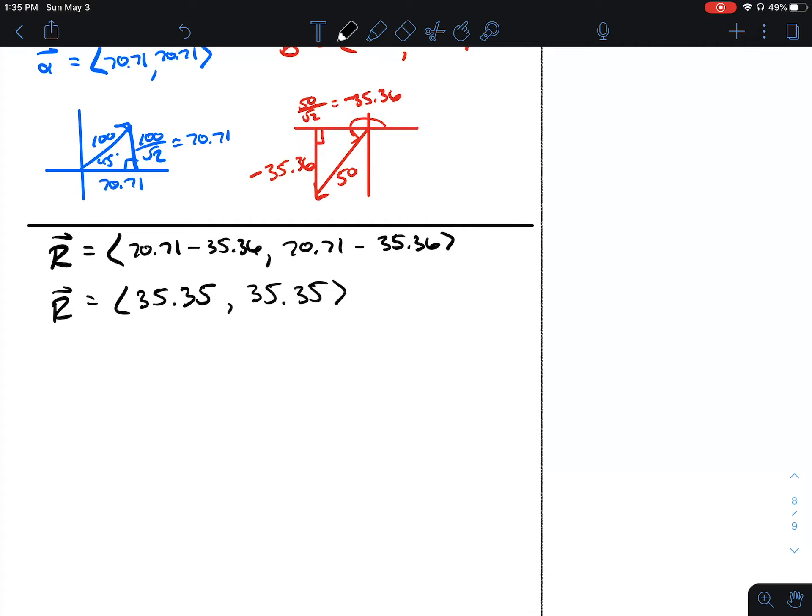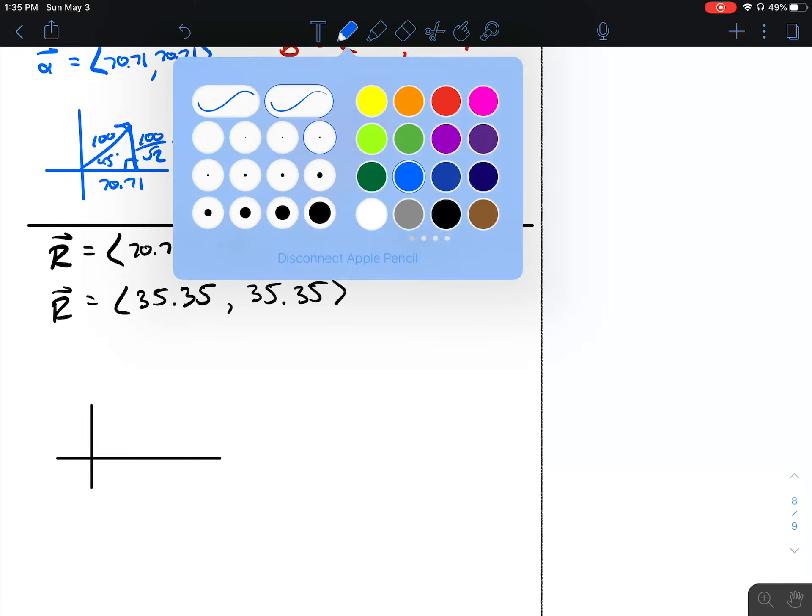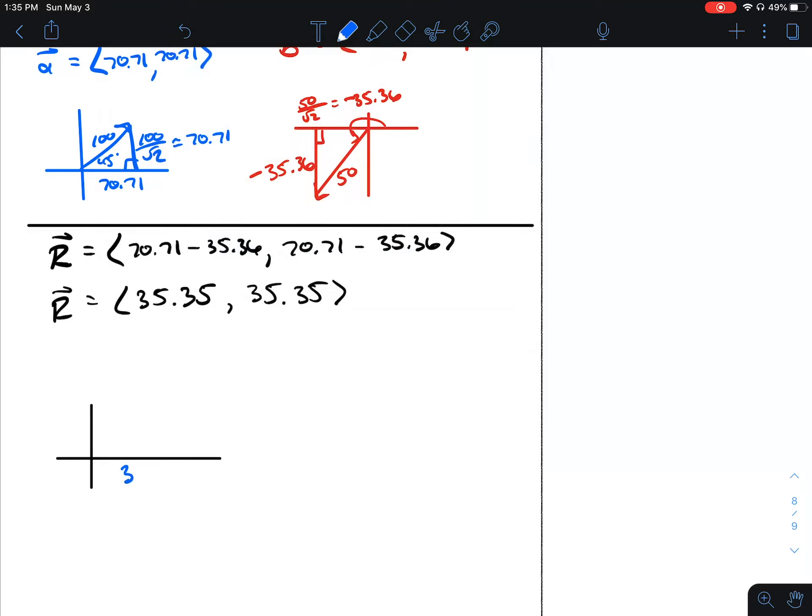Right now we have this triangle. We're going to the right 35.35 and going up 35.35.